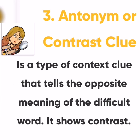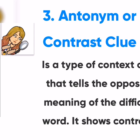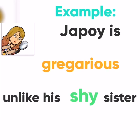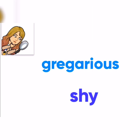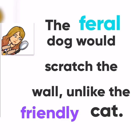The third type is the antonym or contrast clue. It is a type of context clue that tells the opposite meaning of the difficult word — it shows contrast. For example, 'Japoy is gregarious, unlike his shy sister.' Gregarious is the difficult term and 'shy' is its antonym. Another example: 'The feral dog would scratch the wall, unlike the friendly cat.' The difficult term is 'feral,' while its antonym is 'friendly.'